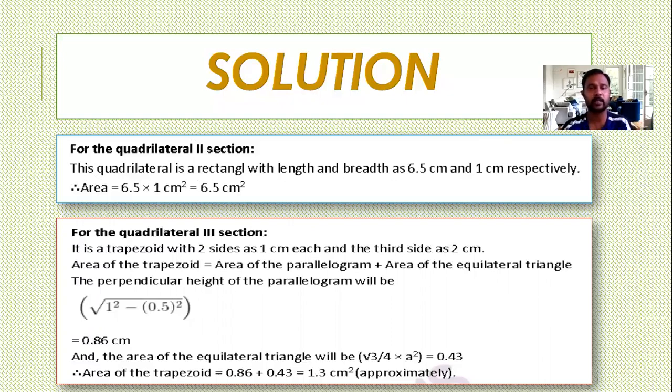The perpendicular height. What is the perpendicular height? When you draw the perpendicular height, it is applying Pythagoras theorem. It is root of 1 square minus 0.5 whole square. Half of 1. 0.5 whole square. Simplifying, you are getting 0.86 cm.